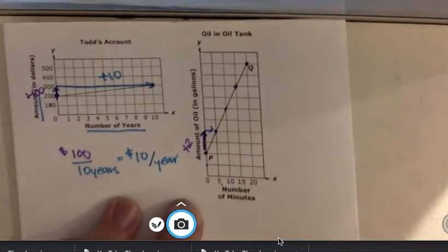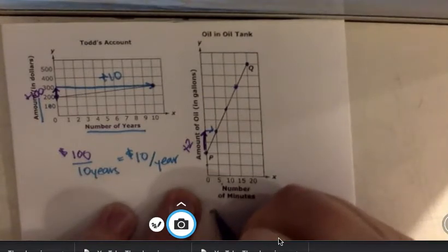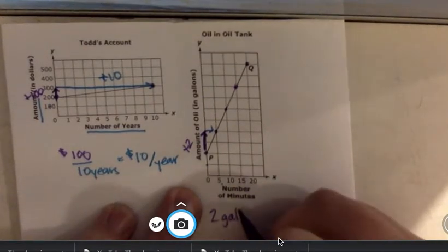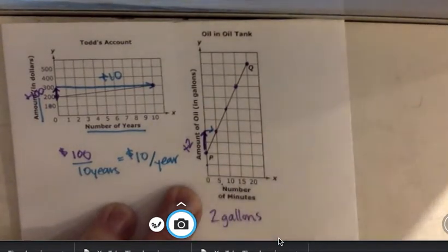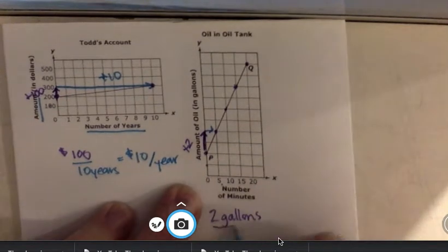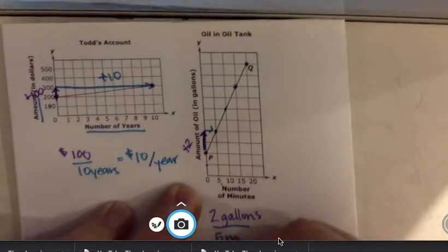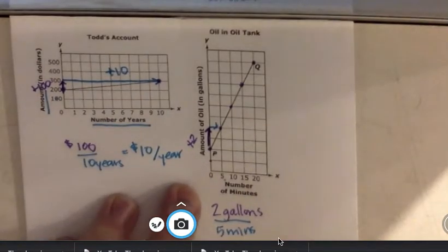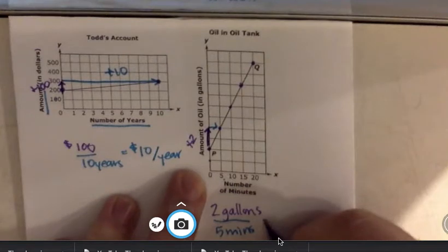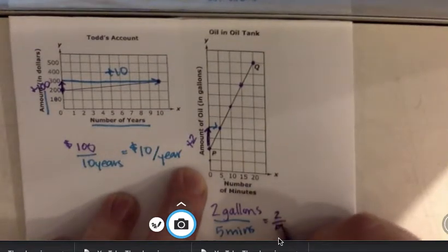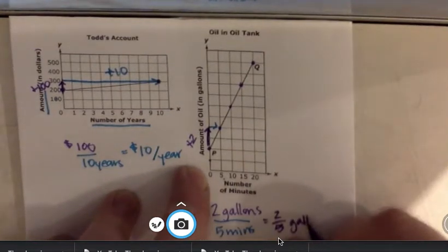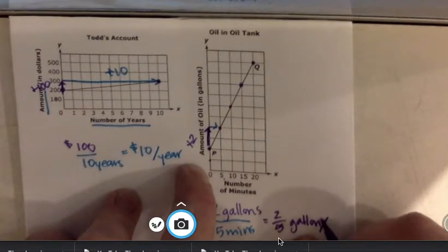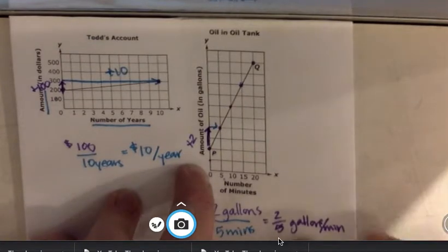So that means my rise over run in this case is two gallons per five minutes. That means we can look at this, and we can say we have two-fifths gallons per minute is our slope.